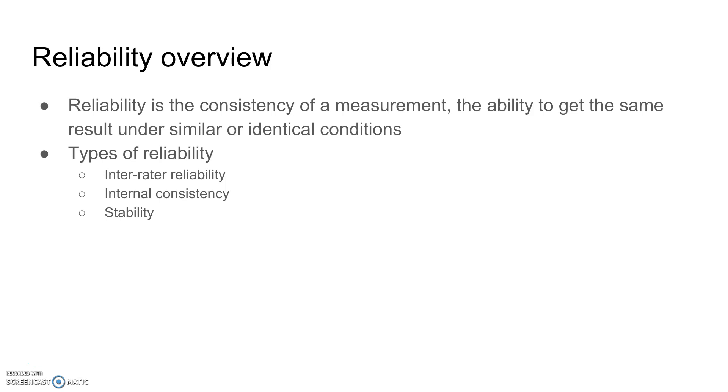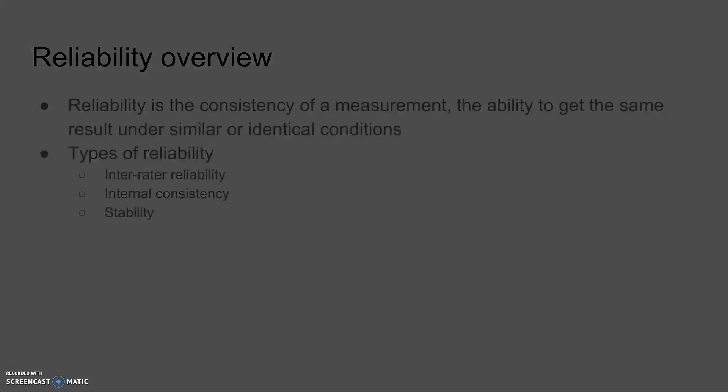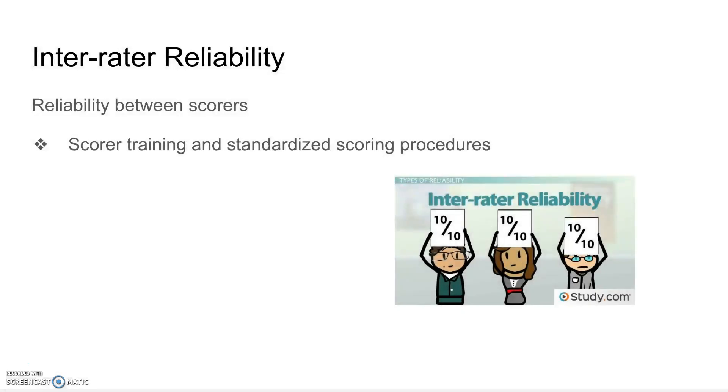The three types of reliability are inter-rater reliability, internal consistency, and stability. The first of these is inter-rater reliability, which means that there is reliability or consistency between the people scoring the test. So two people scoring the same test would score it the same way and give them the same result.